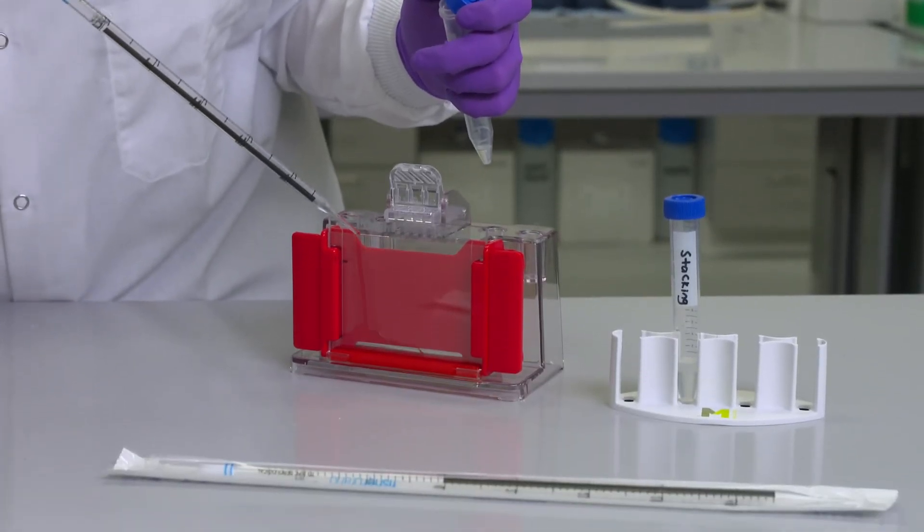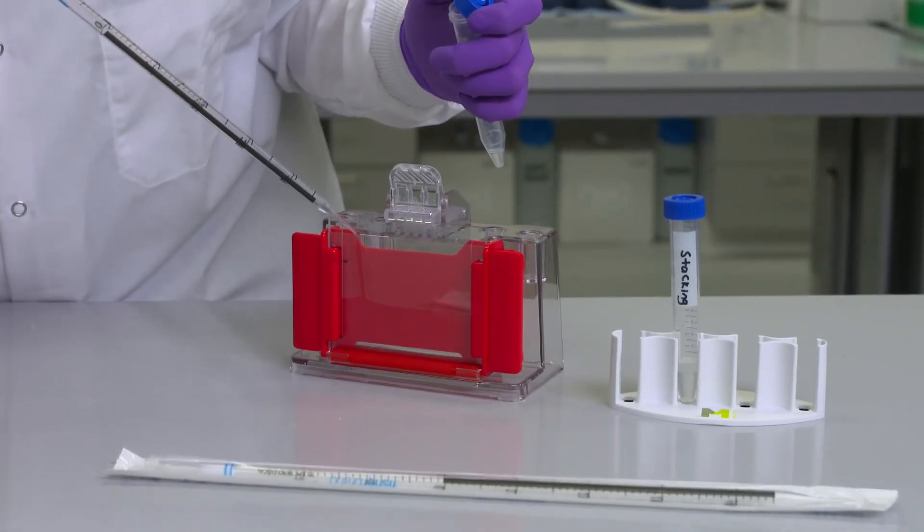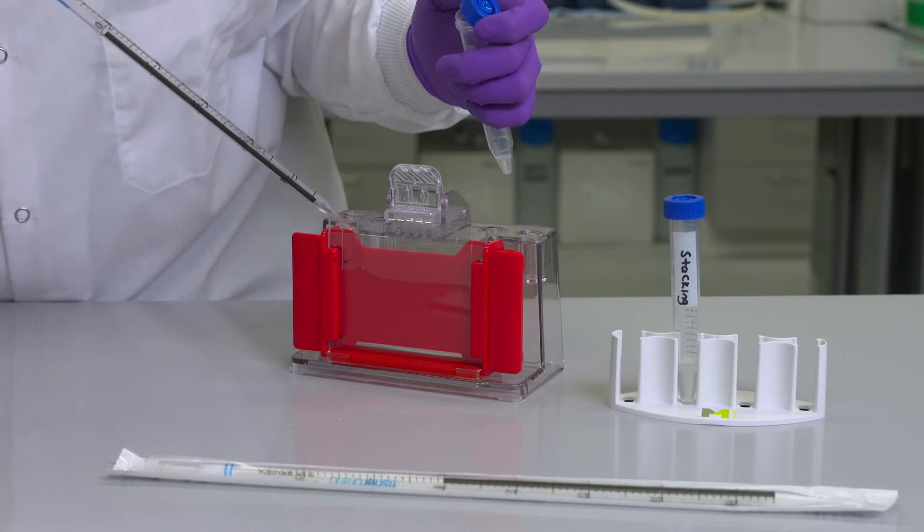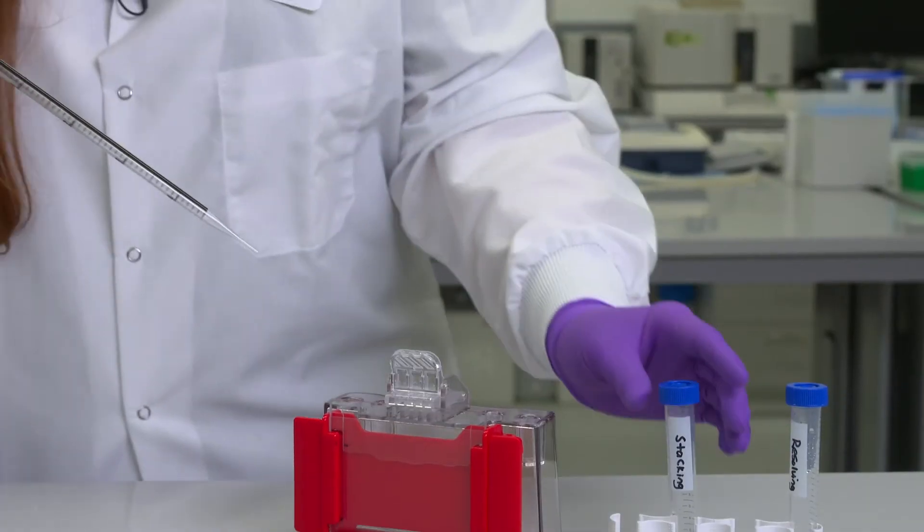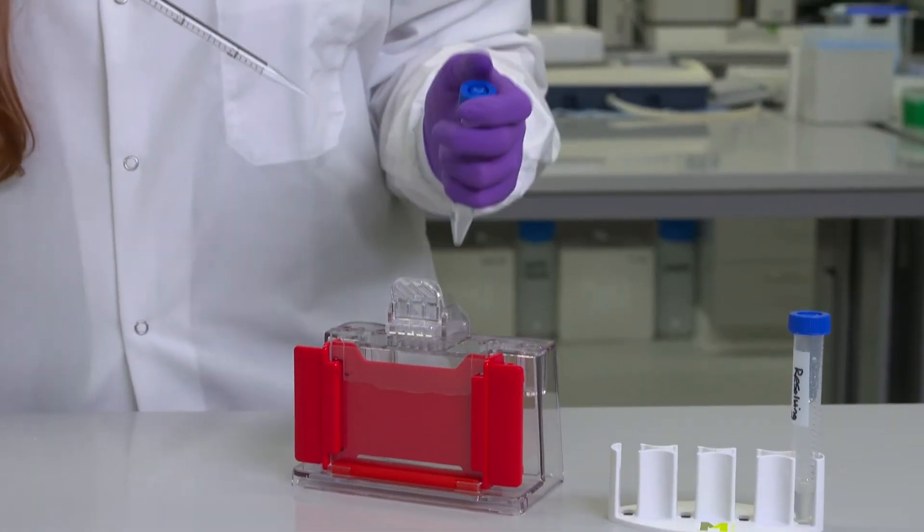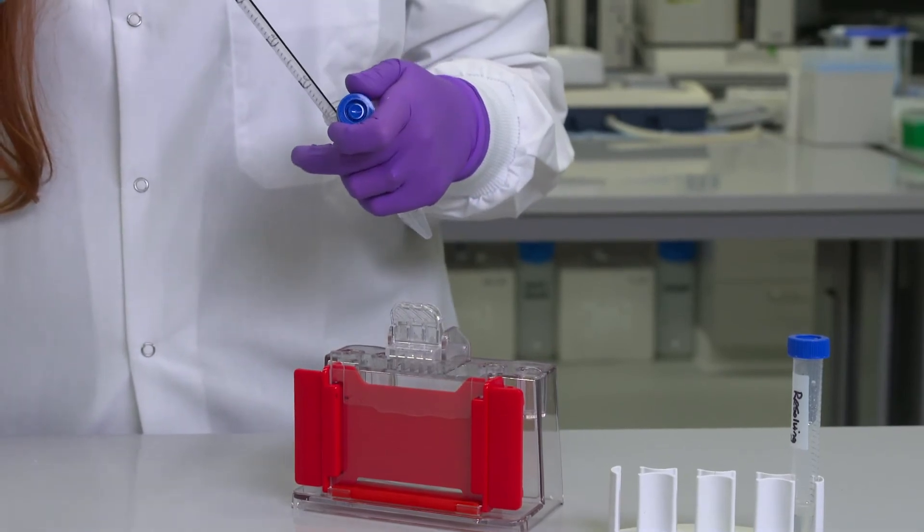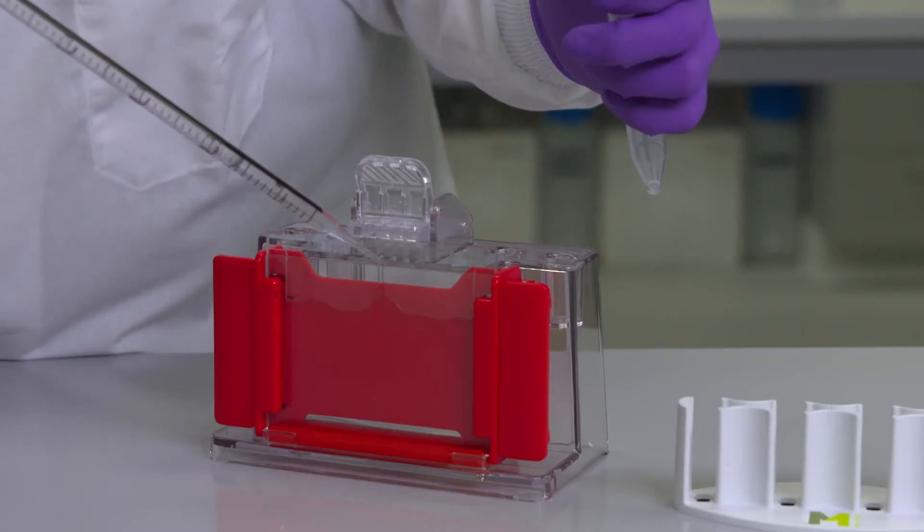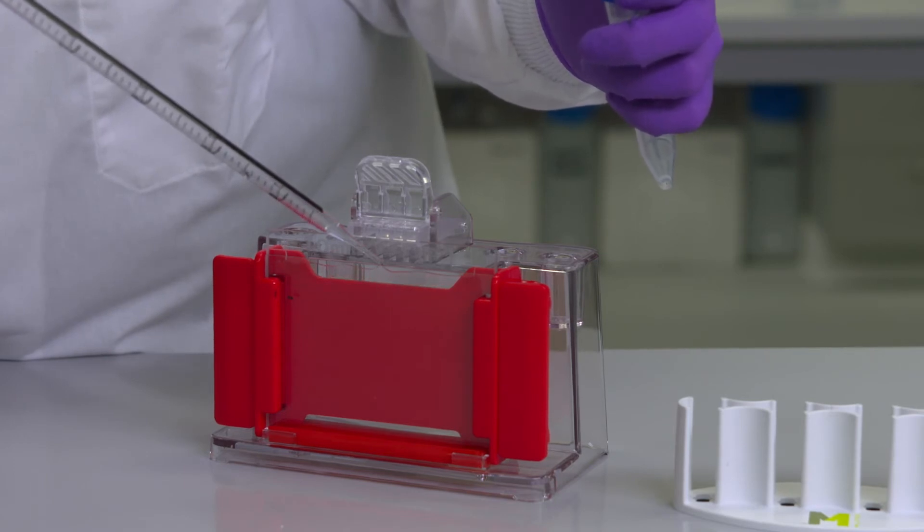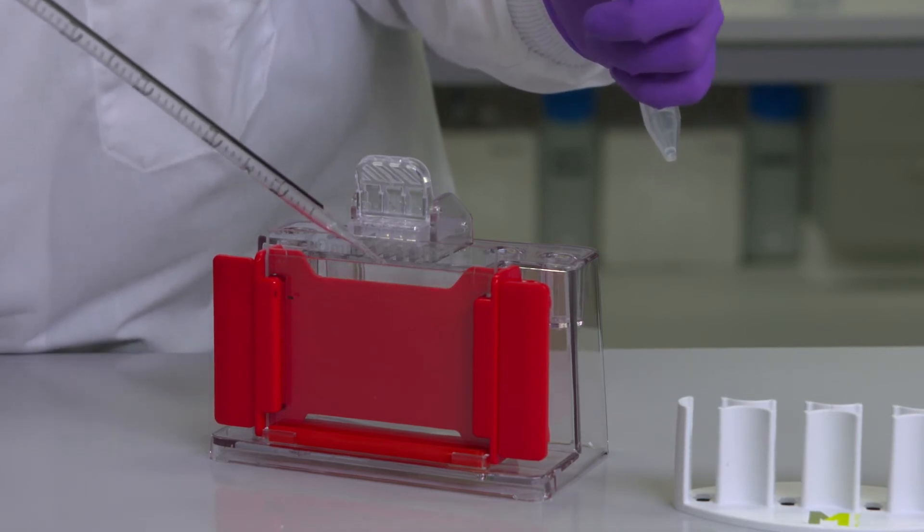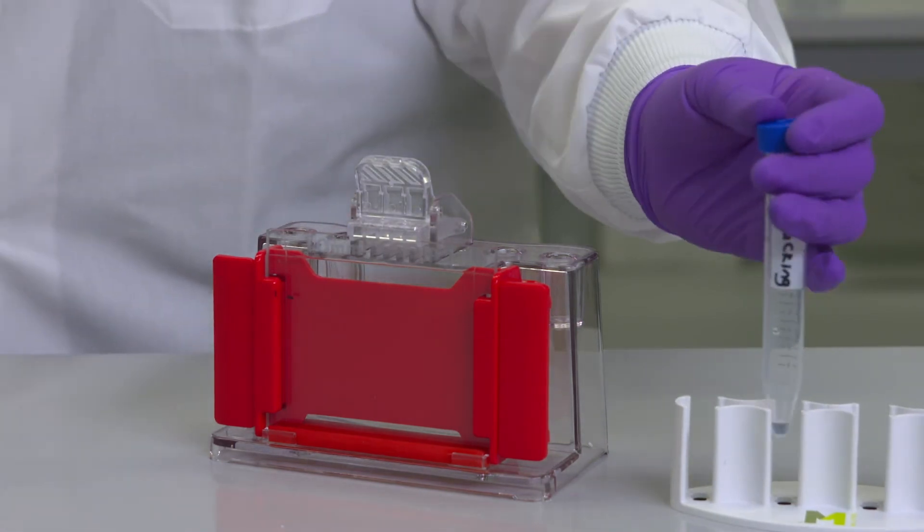Now, I will fill the cassette with resolving gel to the marked height. The stacking gel can be added directly on top of the resolving gel without waiting for polymerization. You may see a dip form where pipetting takes place and this will level out over time. Add enough stacking gel to reach the top of your cassette and this will prevent bubble formation around the comb teeth.